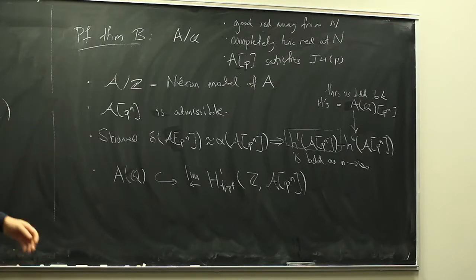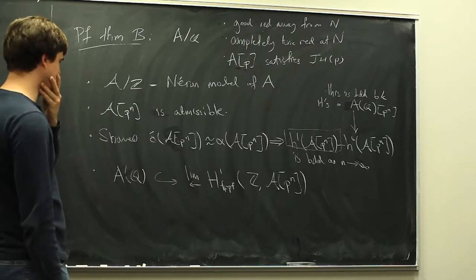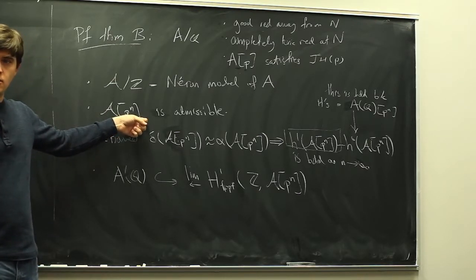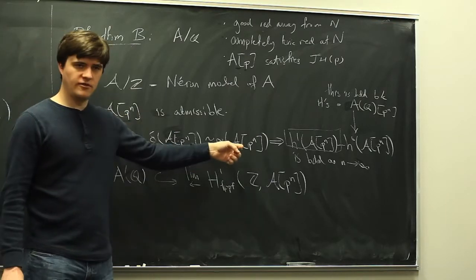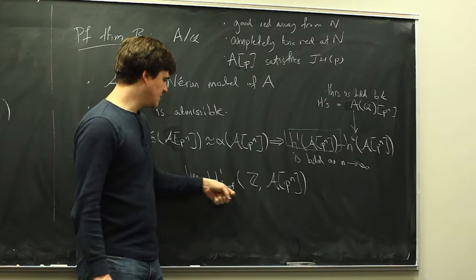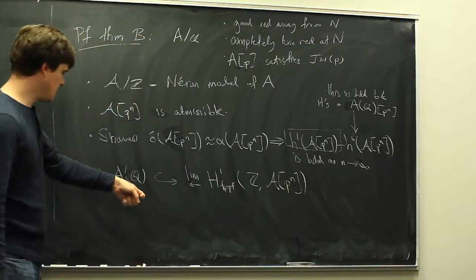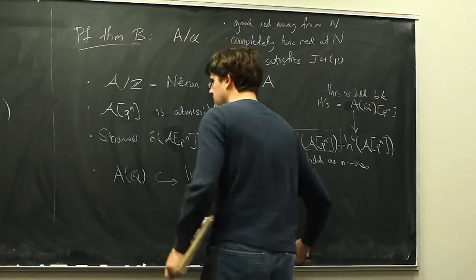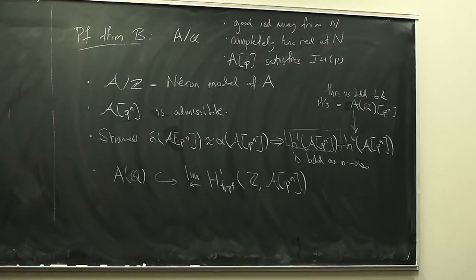We want to carry out the same idea in the setting we're currently in. It's not going to be true that the full p^n torsion is admissible. But what we're going to do is take it and localize at the ideal a—that part will be admissible. Then we can compute delta and alpha of that part, find that the FPPF cohomology with a-coefficients is finite, and that tells us some a-part of A(Q) is finite.